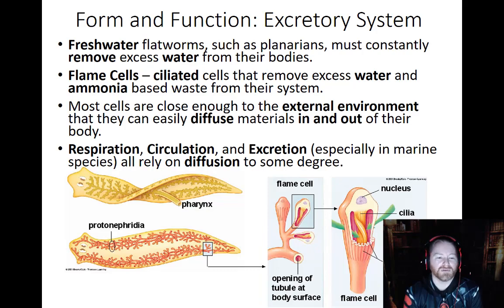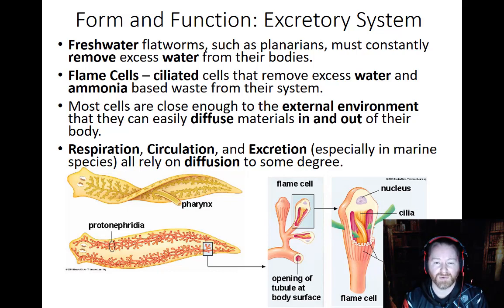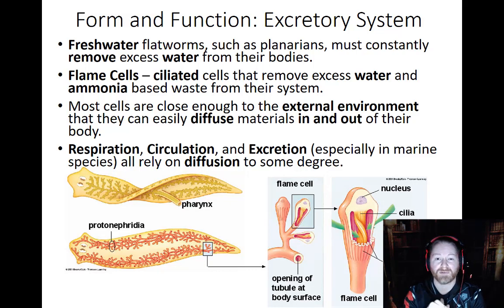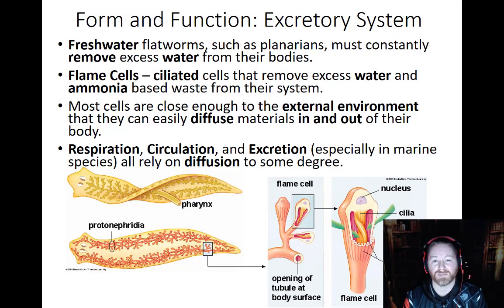Another major system we see in flatworms is an excretory system — something never seen in sponges or cnidarians, where cellular waste simply diffused out. But even with a flatworm being flat — meaning cells in the middle are never too far from an outside surface — some cells deeper inside still need a little assistance. This is where we see the evolution of a rudimentary excretory system, centered on cells called flame cells.